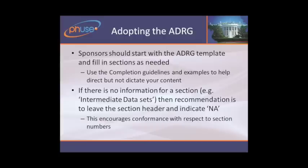When you start to adopt the ADRG, start with the template document — the blank document — and fill in the sections as you need, using the completion guidelines to help direct but not dictate your content. If there's no information for a given section — for example, if you don't have any intermediate data sets — our recommendation is to leave that section header in there and just indicate 'not applicable.' That means the section numbers will all conform across the industry for all reviewer's guides as opposed to being renumbered.